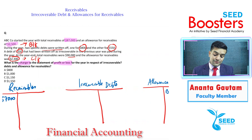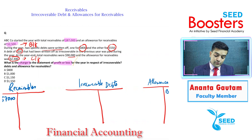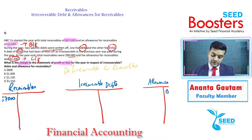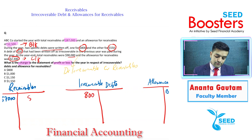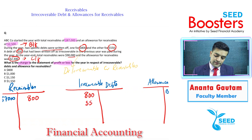For the write-offs, the double entry is: debit irrecoverable debts, credit receivables. So we put 800 in irrecoverable debts debit and credit receivables, and similarly 550 — debit irrecoverable debts, credit receivables.